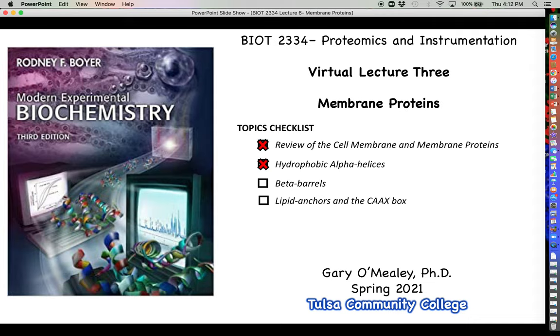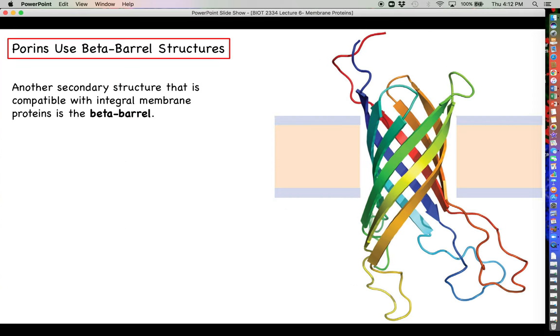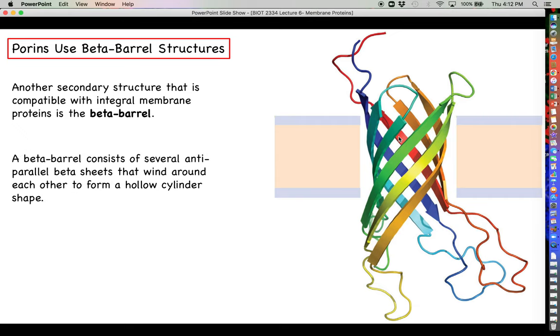What we're going to see here is that the beta barrel accomplishes something totally different for a membrane protein than an alpha helix did. This is what a beta barrel looks like. Judging from the fact that the word beta is in here, you can probably surmise that this is a type of structure that is mostly made up of beta sheets and beta strands. The beta barrel structure is characterized by several anti-parallel beta sheets that wind around each other to form something like a hollow cylinder shape.